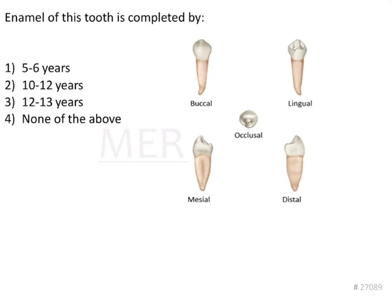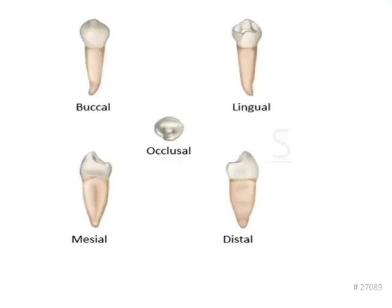The question here is: the enamel of this tooth is completed by? First, we will have to identify the tooth and then go ahead with the question. In the buccal view, we can see that the tooth looks quite symmetrical — buccally there will be quite symmetry.